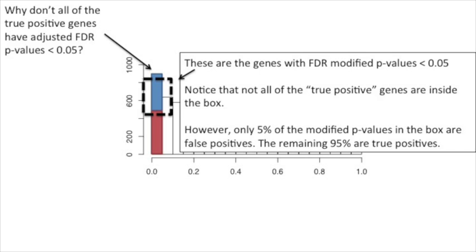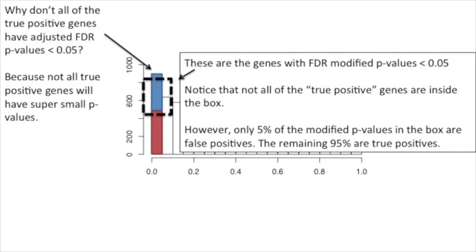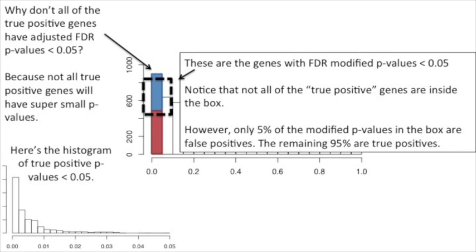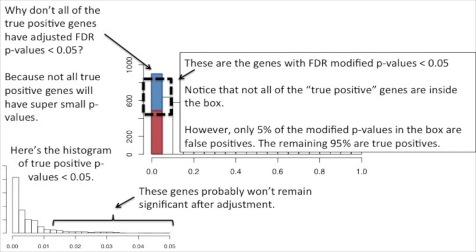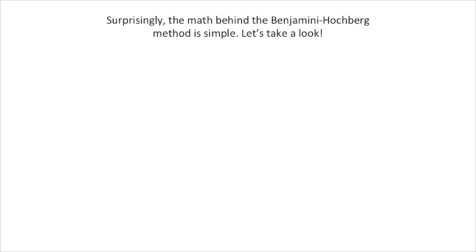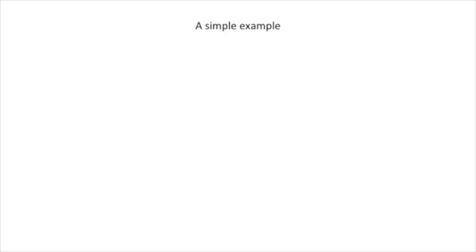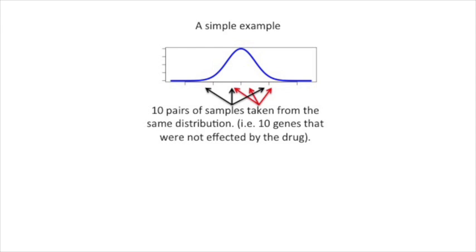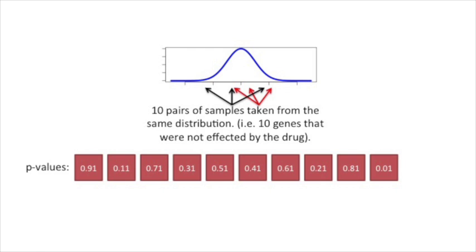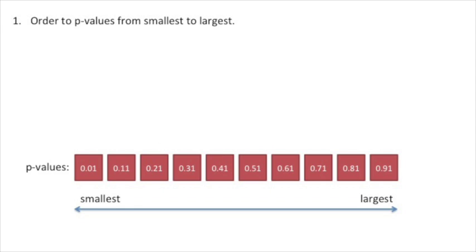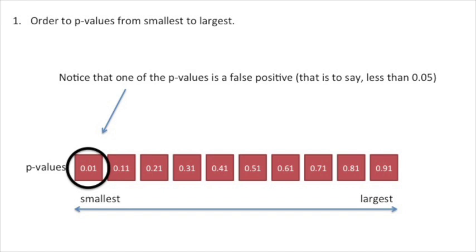Why don't all of the true positive genes have adjusted FDR p-values less than 0.05? Because not all true positive genes will have super small p-values. The genes on the right side of the true-positive histogram probably won't remain significant after adjustment. Surprisingly, the math behind the Benjamini-Hochberg method is simple. Let's start with another example: we'll take 10 pairs of samples taken from the same distribution — 10 genes that were not affected by the drug — and here are the p-values from those 10 tests. The first step is to order the p-values from smallest to largest.